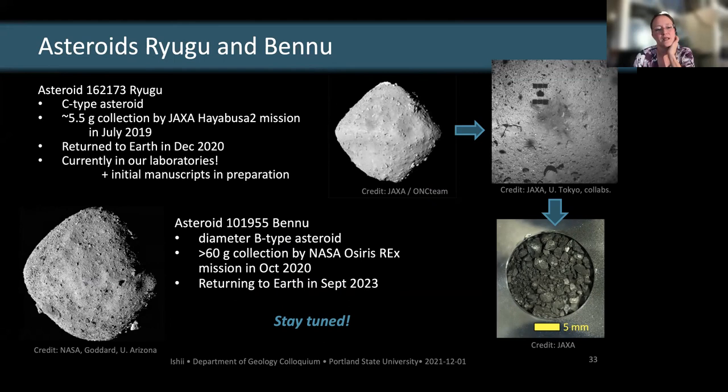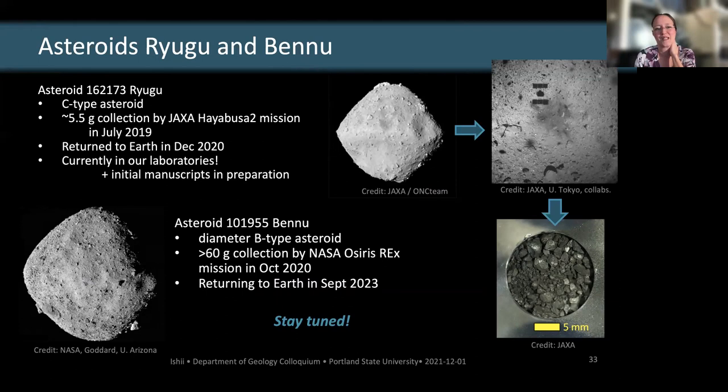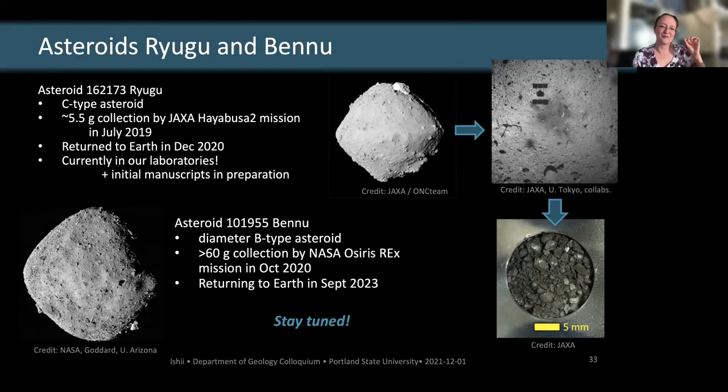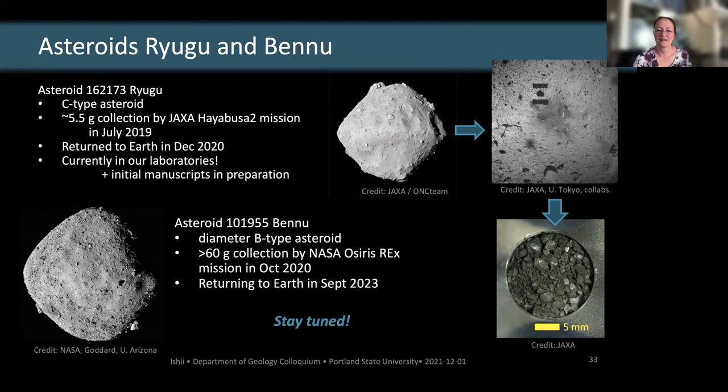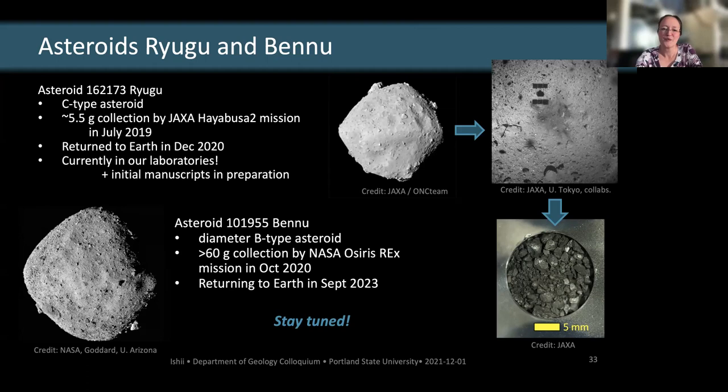There are two other asteroid sample return missions to mention. Hayabusa 2, also a JAXA mission to a carbonaceous-type asteroid, returned to Earth last year and is currently in our labs; initial manuscripts are in preparation, so my lips are sealed, but results should come out early in the coming year. NASA's OSIRIS-REx mission is visiting asteroid Bennu and returning in another couple of years. Stay tuned — there's going to be a lot more really interesting results coming from these sample return missions.